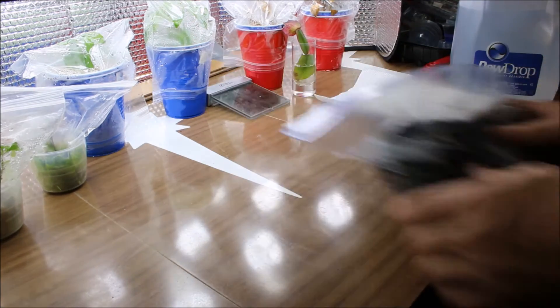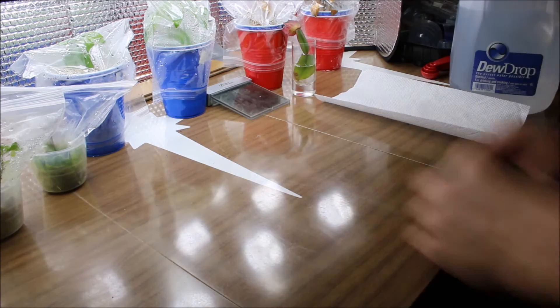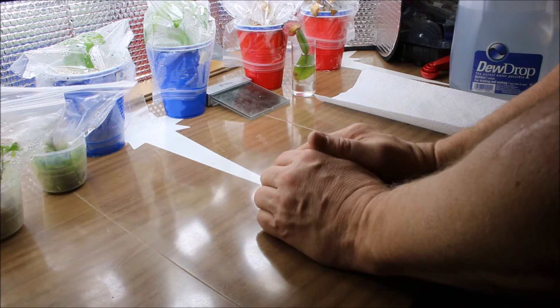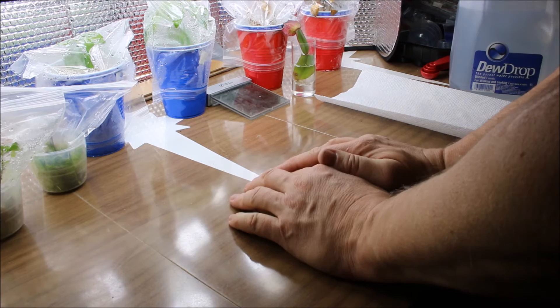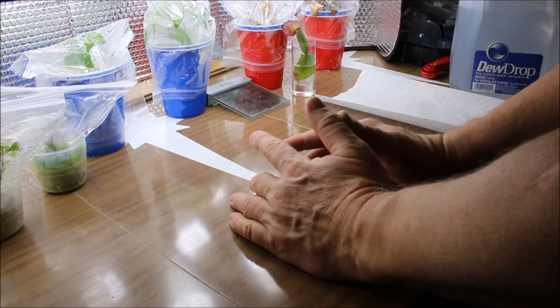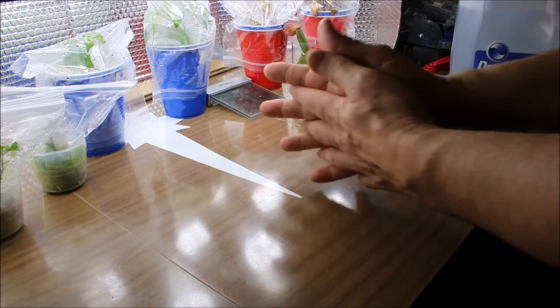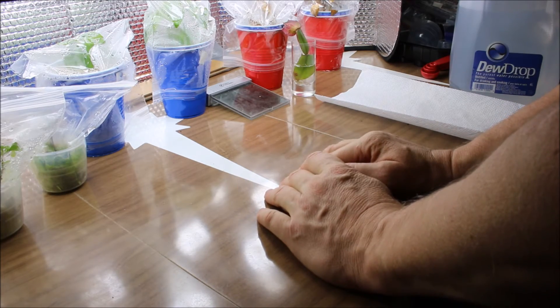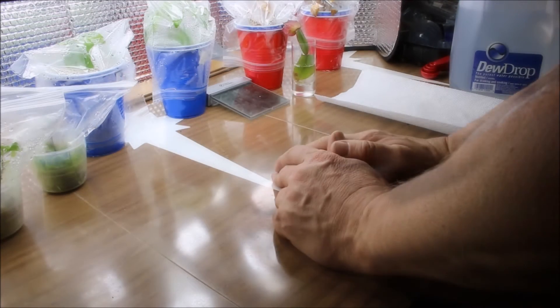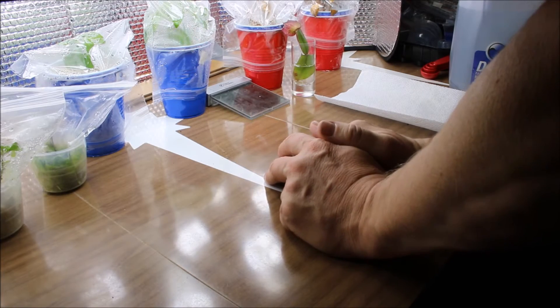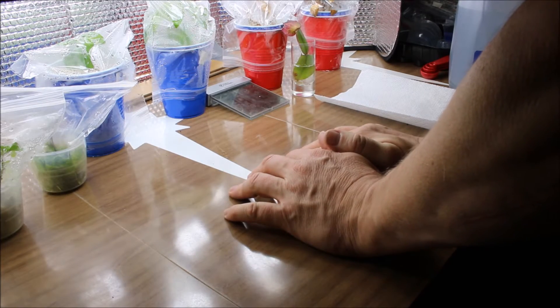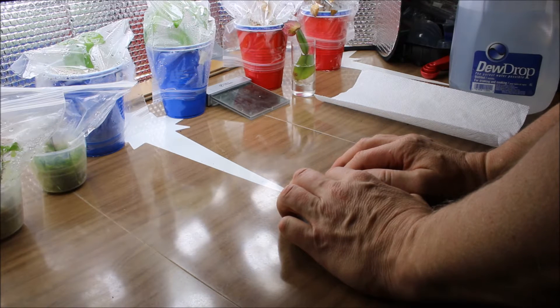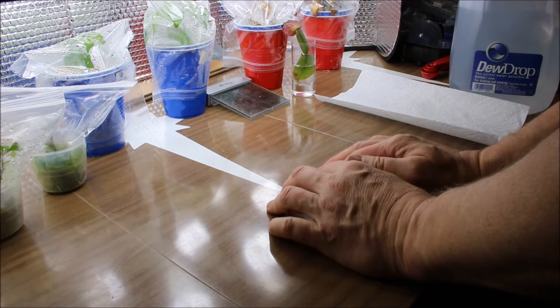So what can you do if you already have fungus gnats in the house? I used to make these wasp catchers in the summer using pop bottles, and I decided to merge that method with the use of apple cider. I read on the web that a lot of people had had some success using apple cider vinegar, and I'll show you what I did with that.